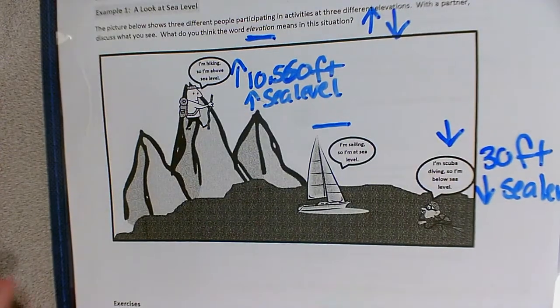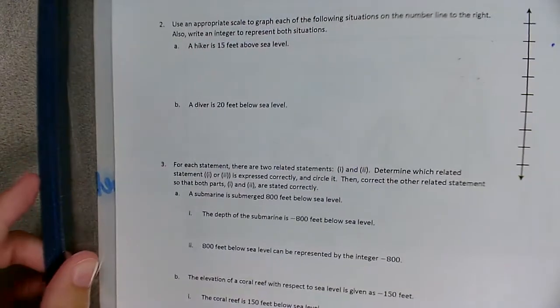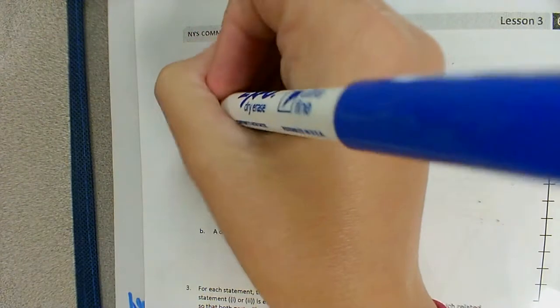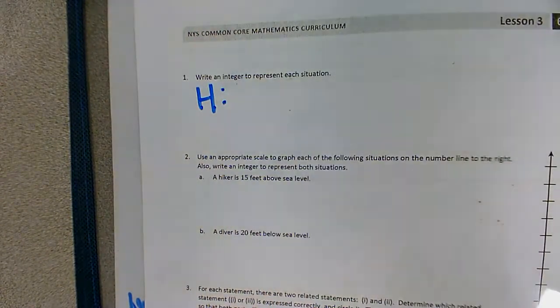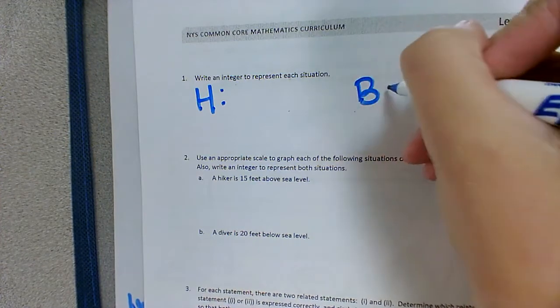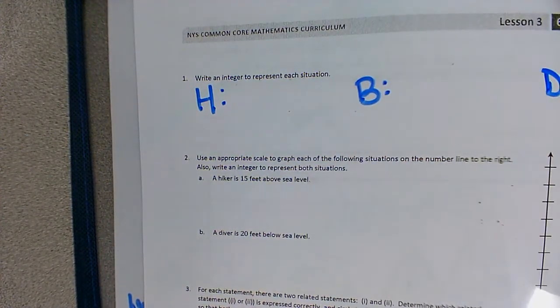So let's keep that in mind for our next couple of questions. So let's write an integer to represent each situation. So I'm going to use letters to indicate which person they are. So H is going to be hiker, B is going to be boat, and D will be diver.